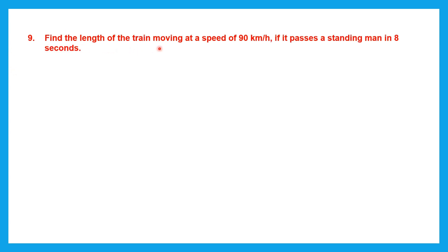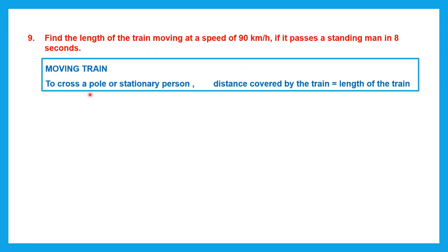Question 9. Find the length of the train moving at a speed of 90 kilometers per hour if it passes a standing man in 8 seconds. Speed and time are given. When a moving train passes a stationary person, the distance covered equals the length of the train. So finding the length of the train means finding the distance covered.